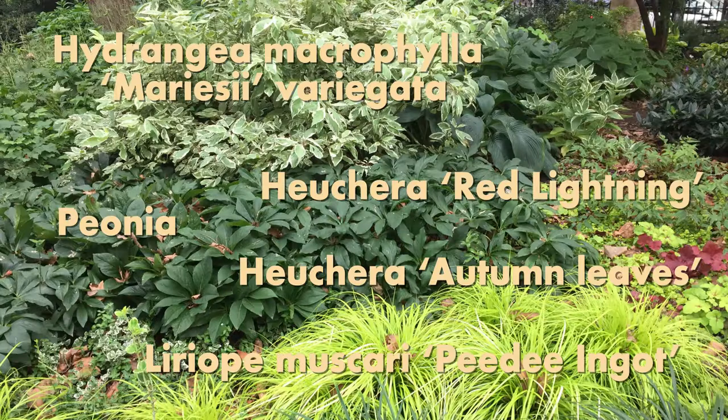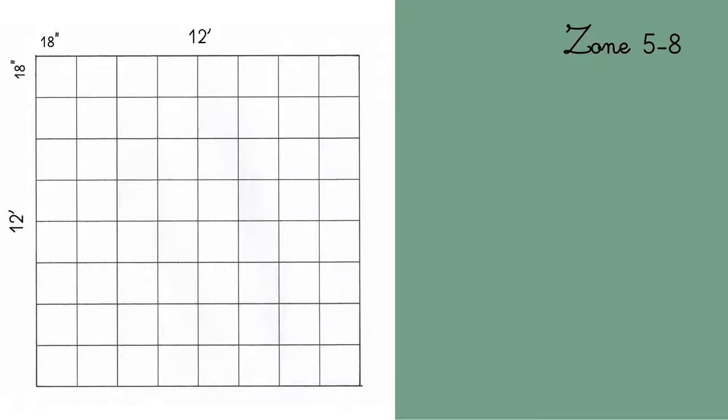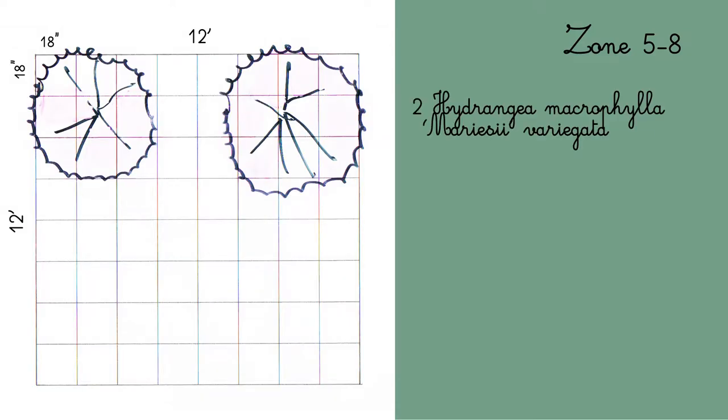So I'm working in a 12 by 12 feet plot, and the smaller squares are 18 inches by 18 inches. First, I would lay down two Hydrangea macrophylla 'Mariesii Variegata'.